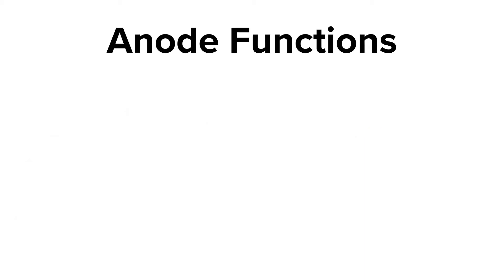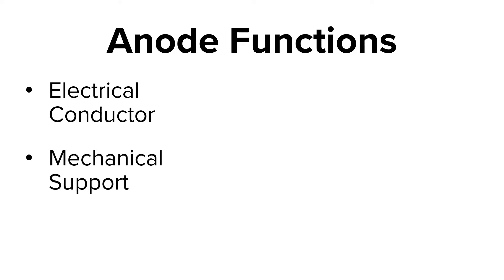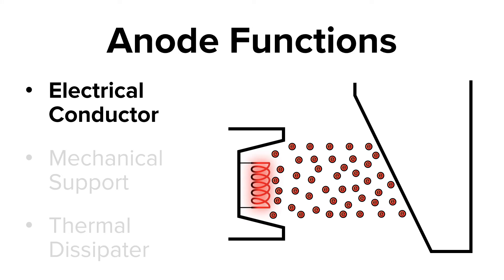There are three main functions of the anode. One is to be an electrical conductor, two is to provide mechanical support, and three is to be a thermal dissipator. The anode is an electrical conductor because it receives the electrons from the cathode, then conducts those electrons through the tube and out to the rest of the circuit.